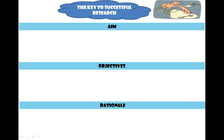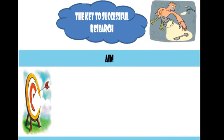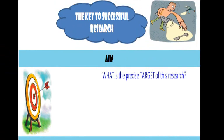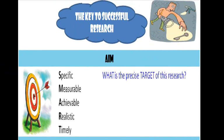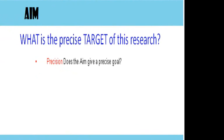Starting with the aim — the aim is the precise target for your research. The acronym SMART can be quite useful when you're thinking about your aim and objectives. They must be specific, measurable, achievable, realistic, and timely. So your aim is exactly what you intend to achieve.